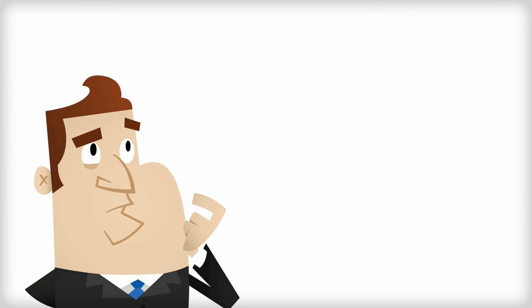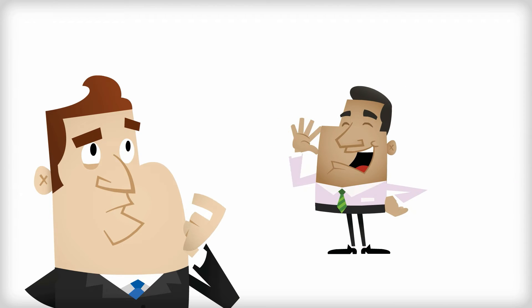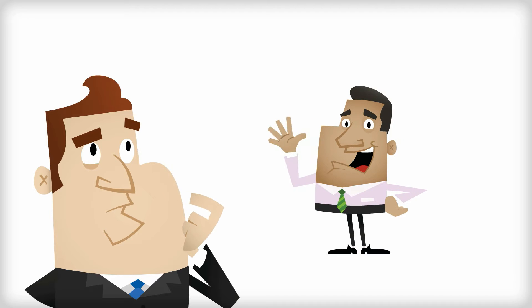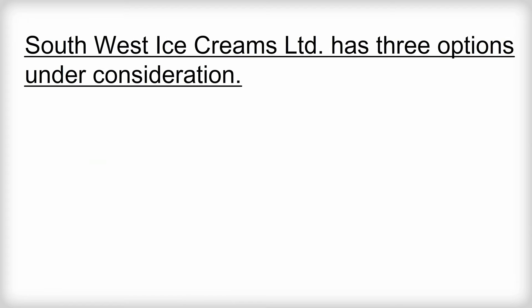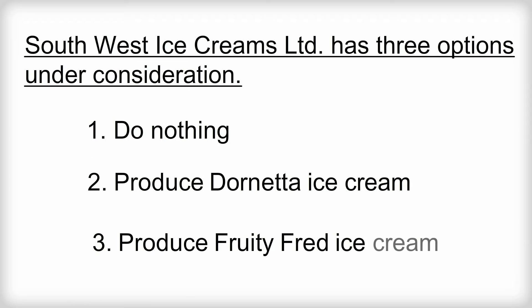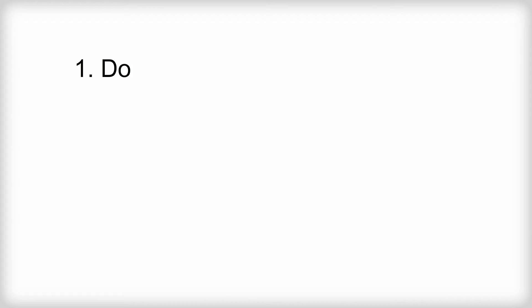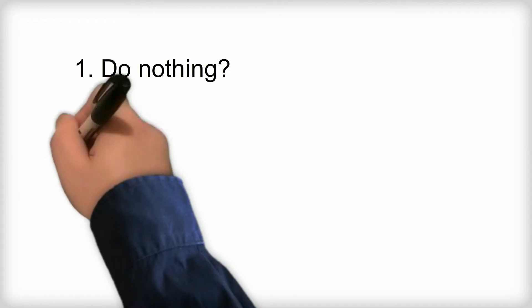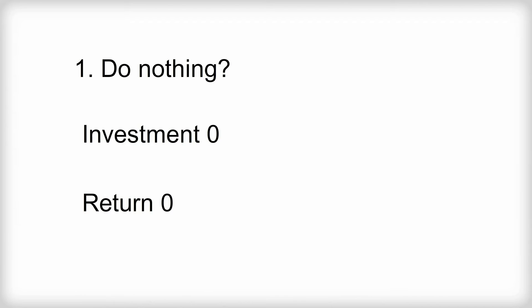Here's an example for a company called Southwest Ice Creams Limited, a medium-sized ice cream manufacturer. We'll show you how to construct and evaluate a decision tree in 10 easy stages. The company has done well in recent years and has accumulated profits of several million pounds, and the directors are considering how to invest this money. Three options are under consideration. Option one is to do nothing.